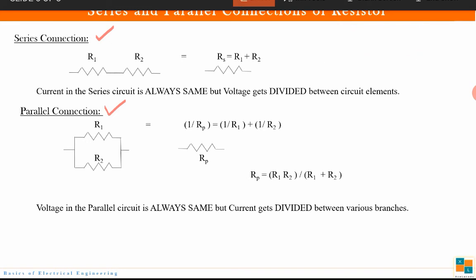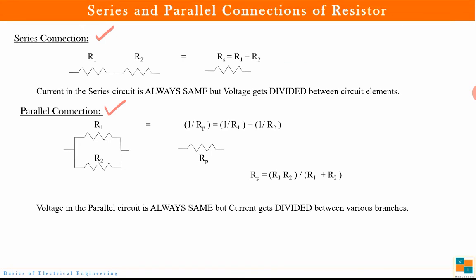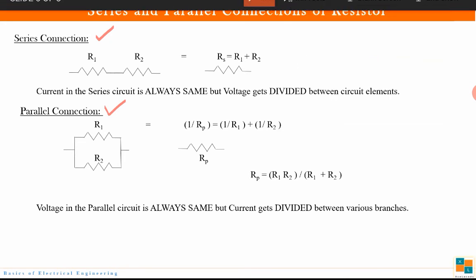Now how does a parallel connection work? If both ends of the components are connected together, then that combination is known as a parallel connection. So if only one end is connected — series; if both ends are connected together — parallel. An important point: in a series circuit the current is always the same, but the voltage is divided between R1 and R2.